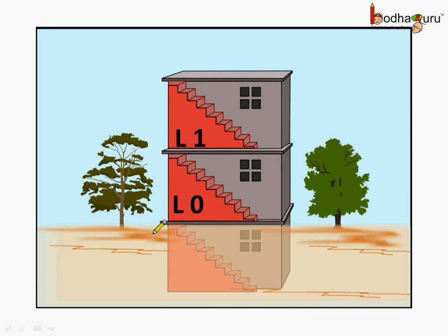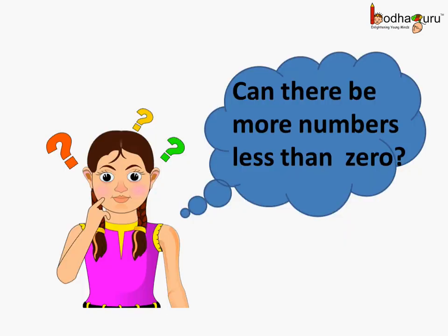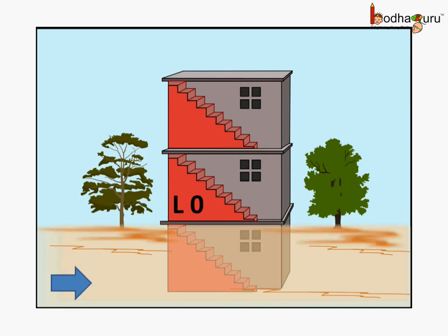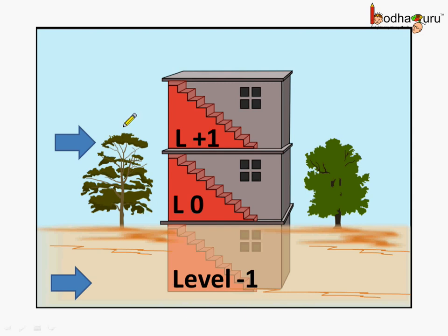This was level 0 as this is ground floor, and then we added one more floor on the top of it, so it was called level 1. But when there was a basement and it was built below the ground floor, then what do we call it? Can there be numbers less than 0? Yes, there are. We can call this level as minus 1. On the similar lines, this level becomes plus 1, which is same as level 1.